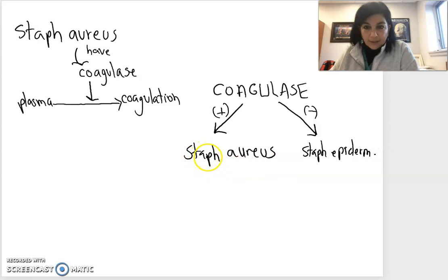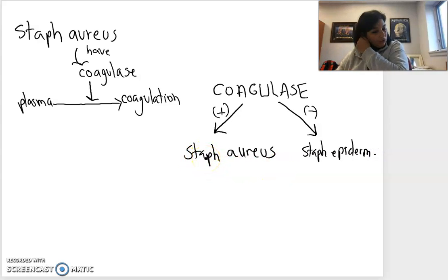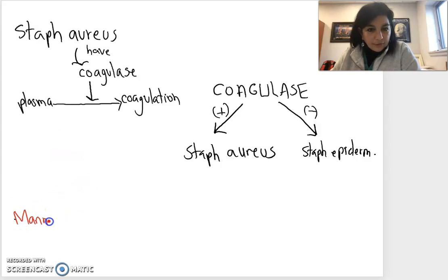But there is another test that we can do to confirm Staph aureus from Staph epidermidis, and it's called the mannitol test. Mannitol is a sugar, and if it's used by the cells - we have to have the proper enzyme to do that - the cell can ferment mannitol.